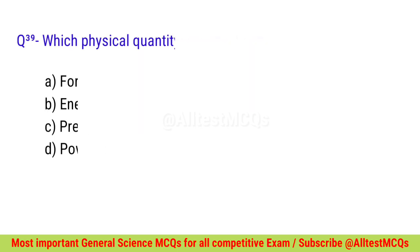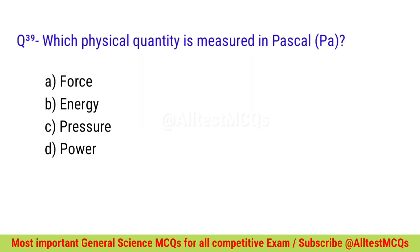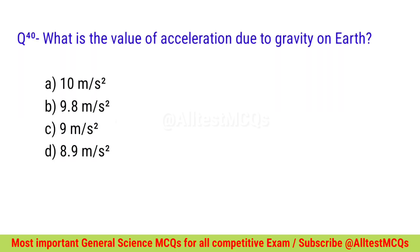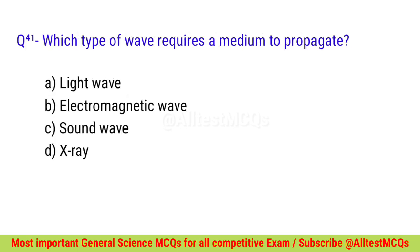Question number thirty-nine: Which physical quantity is measured in Pascal? Correct option is C — Pressure. Question number forty: What is the value of acceleration due to gravity on Earth? Correct option is B — 9.8 meters per second squared.